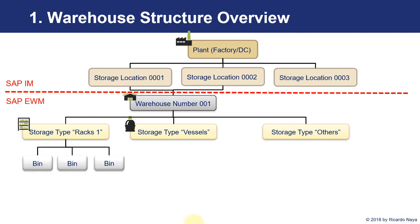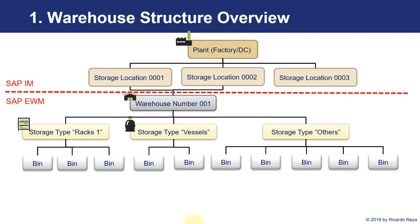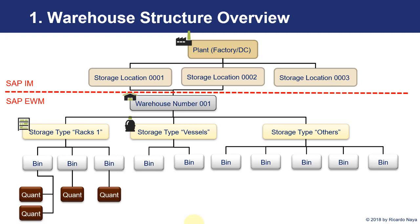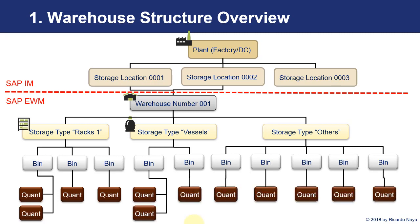Below the storage types, we can have different bins. In fact, we can have storage sections, as we are going to see now, and below storage sections we are going to have the different bins. These bins are going to be specific for each storage type, and then below each bin we are going to have a storage bin with only one quant, or we could have more than one quant in the same bin. Depending on how we set up the system, we can allow this. We are going to see what the quant is in the next sections.